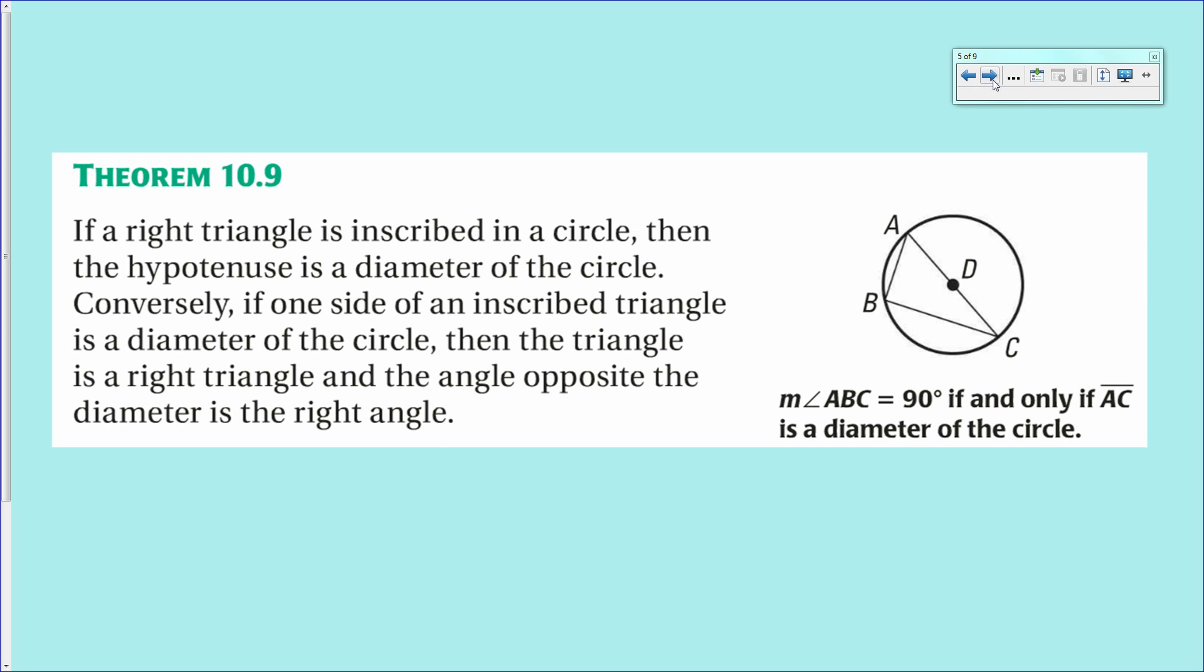Next theorem says that if you have a right triangle that is inscribed in a circle, then the hypotenuse of that right triangle is a diameter of the circle. And likewise, if you draw a triangle in which one of the sides is a diameter, then it will be a right triangle. So this is an if and only if statement. Very powerful.